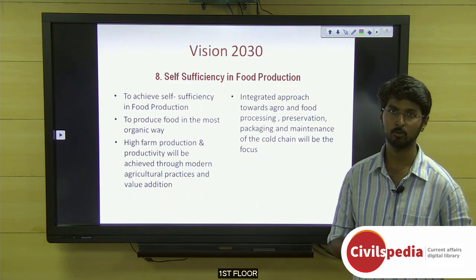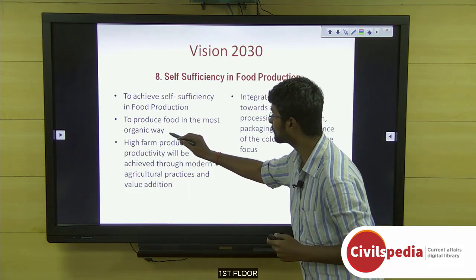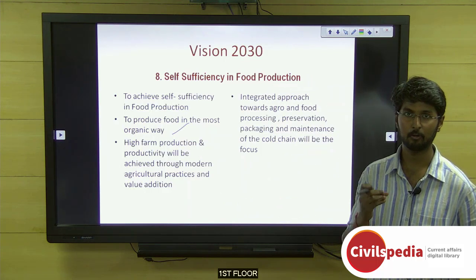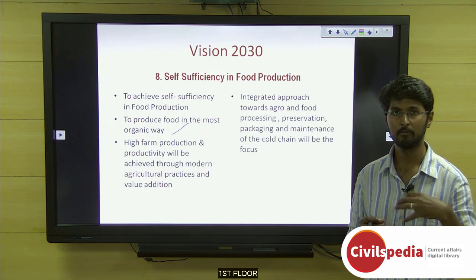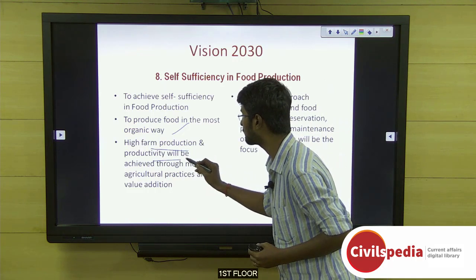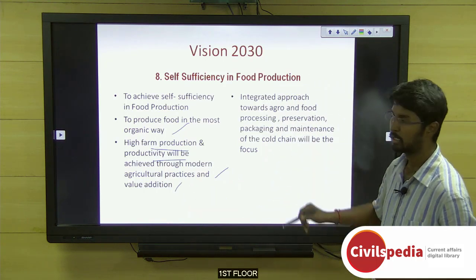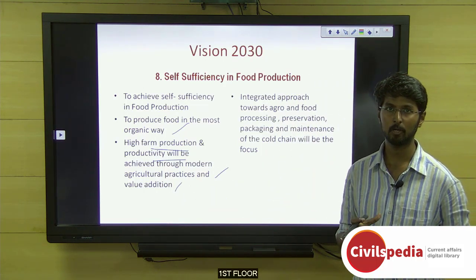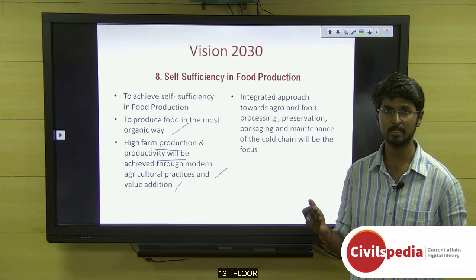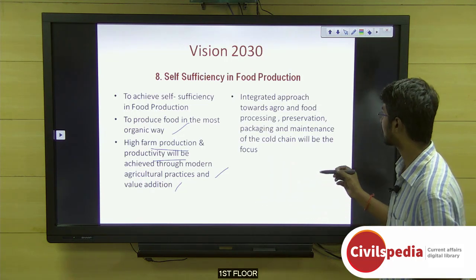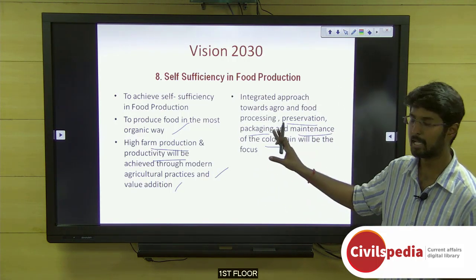The eighth dimension is self-sufficiency in food production — achieving self-sufficiency and producing food in the most organic way. Technology innovations in agriculture will be leveraged, with high farm production and productivity through modern agriculture and value addition. The government will take an integrated approach to both agriculture and the food processing sector — covering preservation, packaging, and cold chain maintenance.